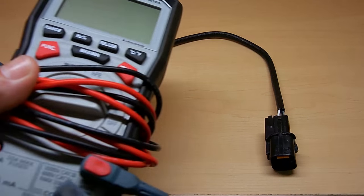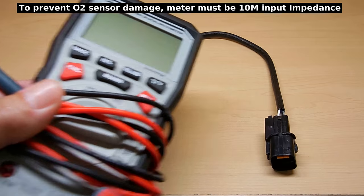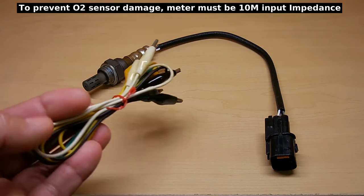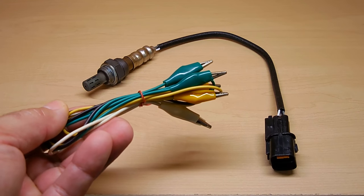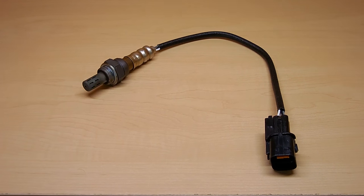Now for this testing procedure, you're going to need a good digital multimeter, a set of jumper wires like you see right here (these are very inexpensive, you can pick these up at Harbor Freight or many places online), you're going to need a 12 volt source of power, and that's going to be the vehicle's battery.